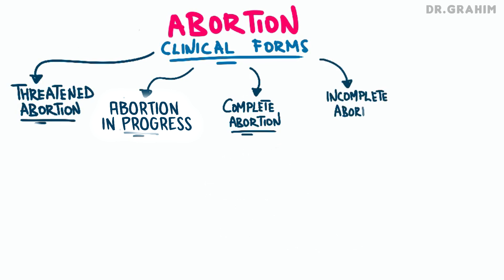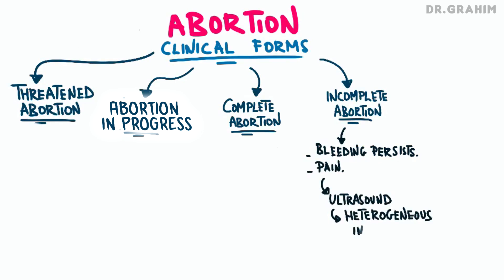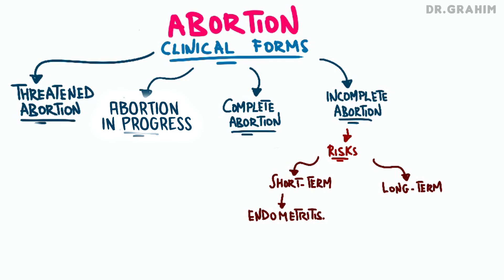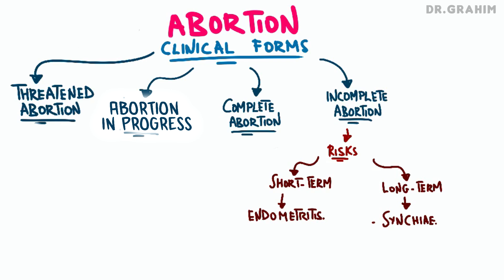The fourth form is an incomplete abortion, which occurs when the process of expulsion is only partially completed and some conception product remains in the uterus. This form is characterized by persistent bleeding, often accompanied by pelvic pain. Pelvic ultrasound shows a heterogeneous intracavitary image, characteristic of trophoblastic debris remaining in the uterus, in the form of placental or embryonic fragments that have not been expelled. In the short term, one of the main risks is post-abortion endometritis, an infection of the uterus that can occur if tissue is retained. Long-term risks include uterine synechiae, or adhesions in the uterine cavity, which can cause menstrual disorders and lead to infertility. An additional risk is osseous metaplasia, where abnormal bone tissue can form inside the uterus.